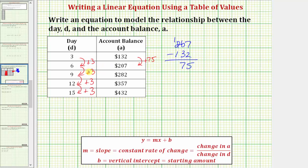Notice how every three days, the account increases by this amount. 207 plus 75 equals 282, 282 plus 75 equals 357, and 357 plus 75 equals 432.